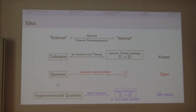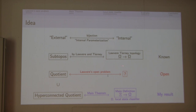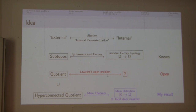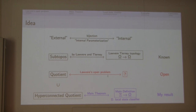The first problem of Lawvere's open program is the existence of such internal parameterization for quotients. Here, quotient means a connected geometric morphism from a given topos. This program is still open. My result is a construction of a bijective correspondence between hyperconnective quotients — meaning hyperconnective geometric morphisms from a given topos — and some internal homomorphism in a given topos. The red part is open, and the blue part is my result.